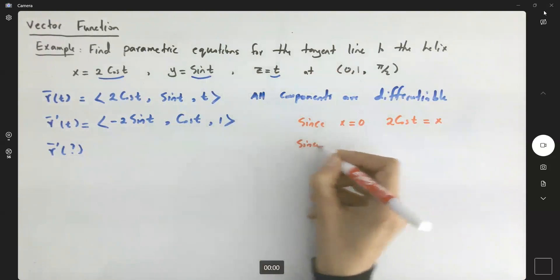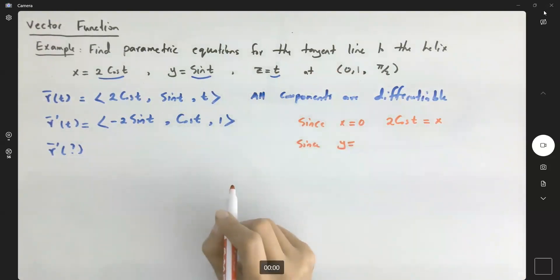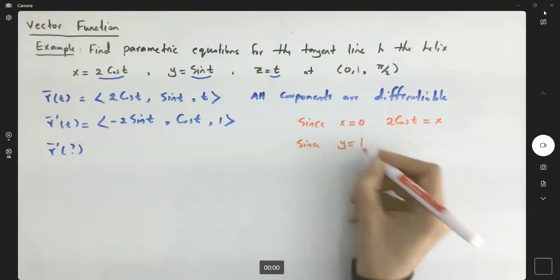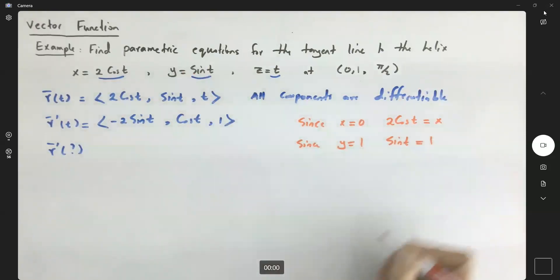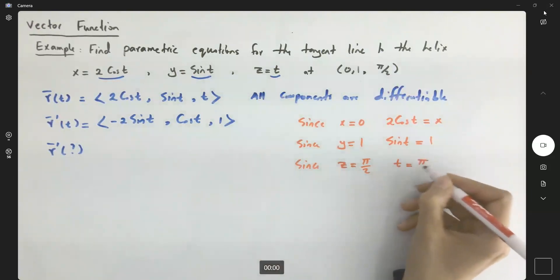So, again, since your y is equal to 1, you can set the sine of t equals to 1 and solve for t. Or finally, the easiest one is since z is equal to π/2, and your z is equal to t, t is π/2.